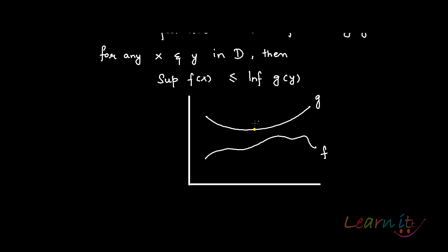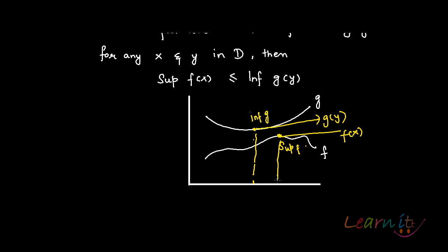The point in the statement is that if this is the infimum of g — this is infimum of g and this looks like the highest point, the supremum of f — what we are trying to say is that this is essentially g(y) and this is essentially f(x), because these are different points in the domain.